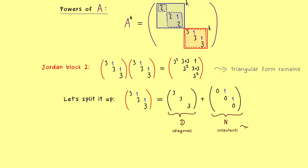The term nilpotent means that some power of N equals the zero matrix. In this case it's easy to see: N squared is the matrix with zeros everywhere except a 1 in the top-right corner, and therefore N cubed is already the zero matrix. All higher powers are zero as well. For a nilpotent matrix, we only have finitely many non-trivial powers.